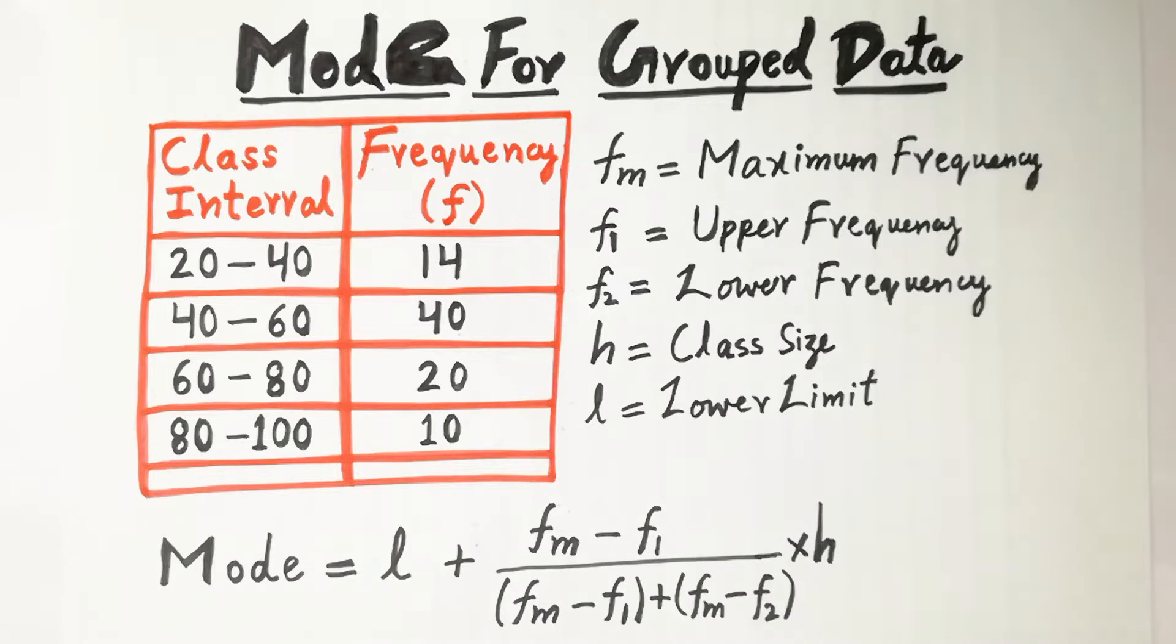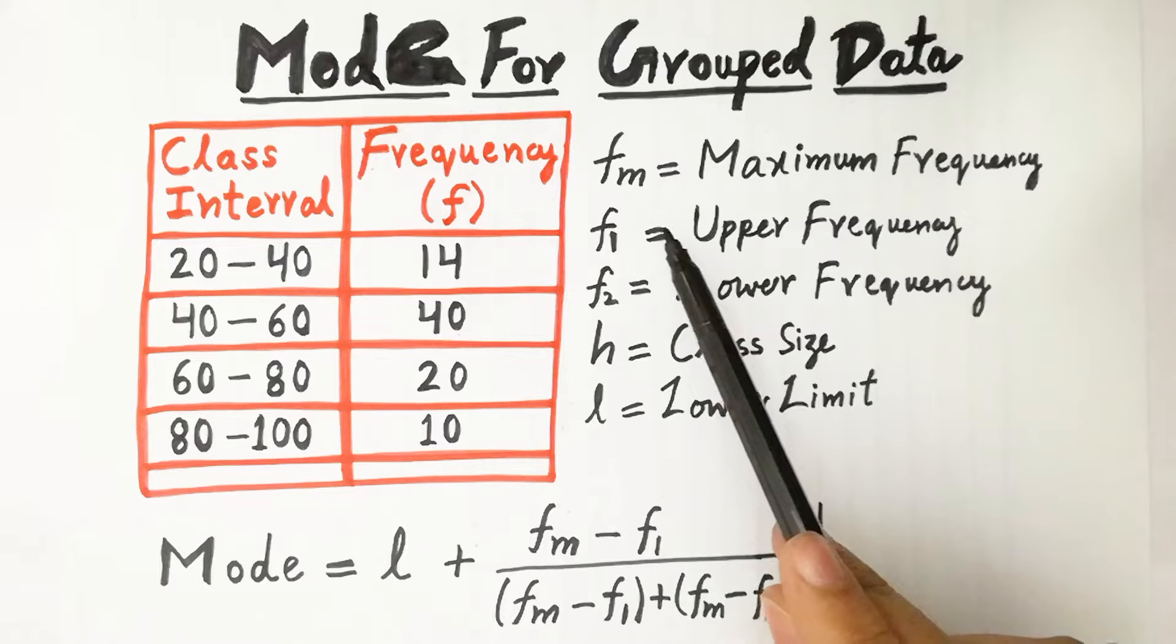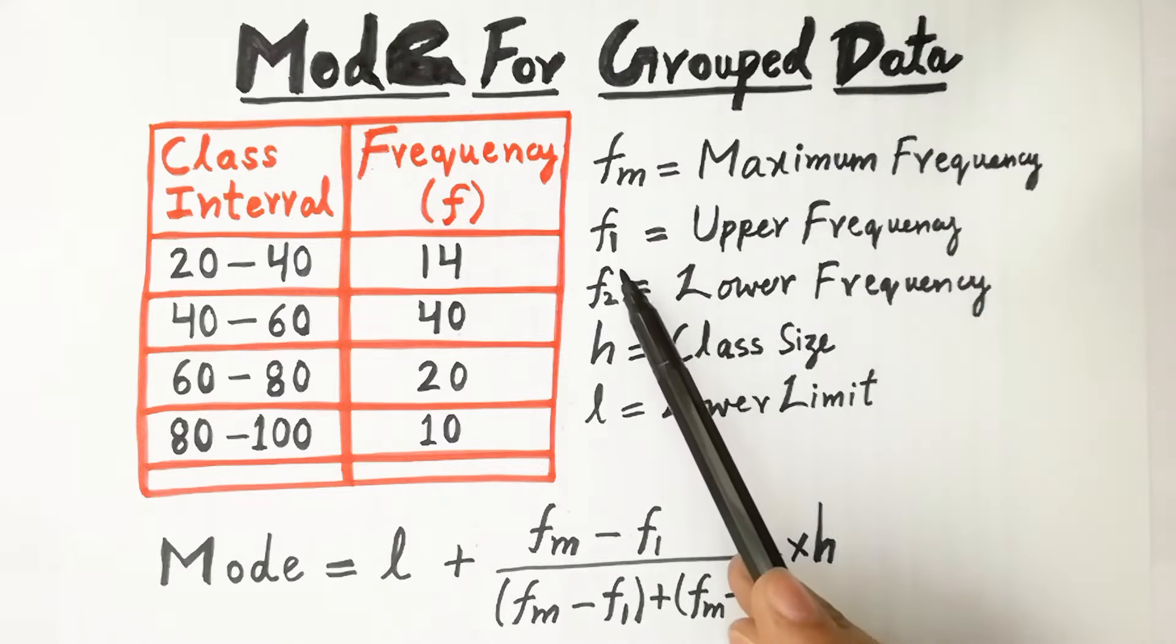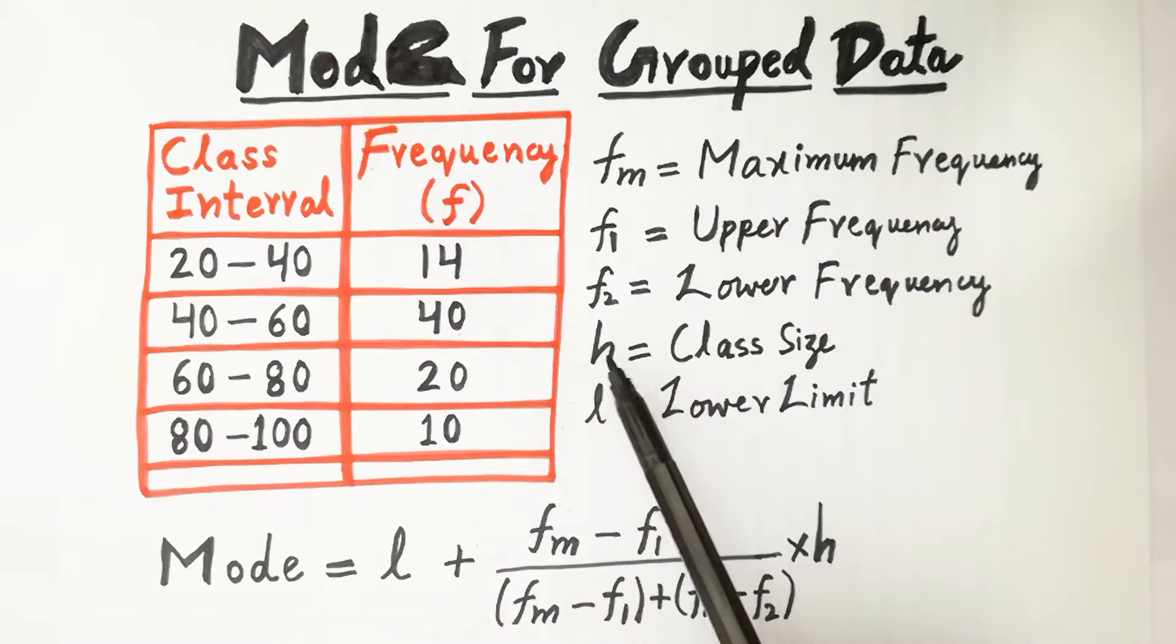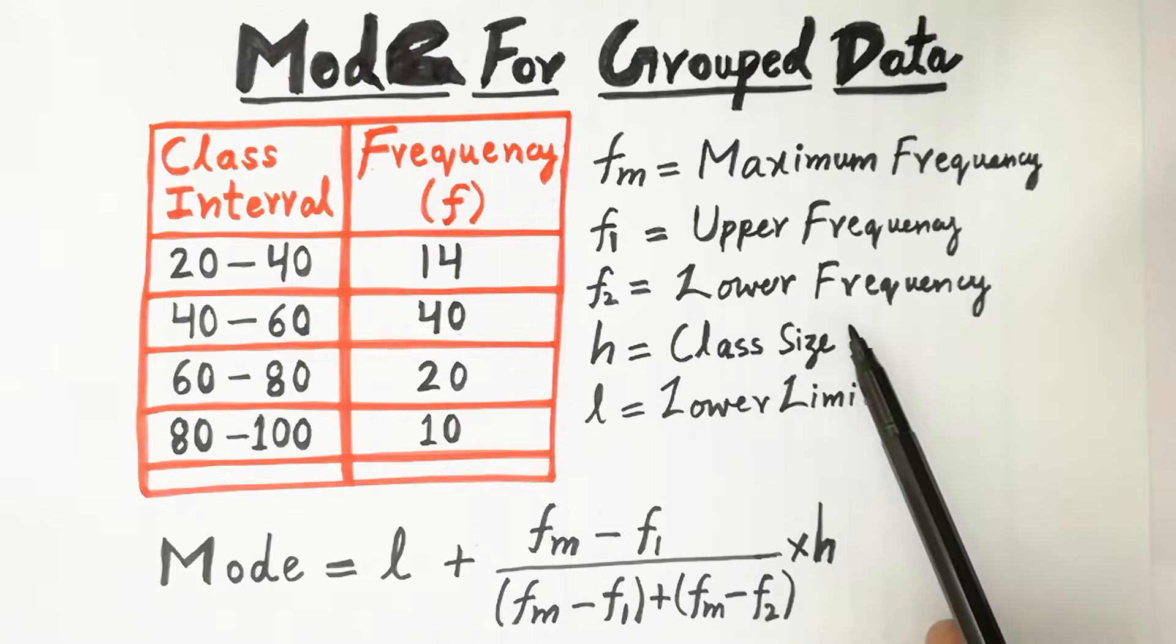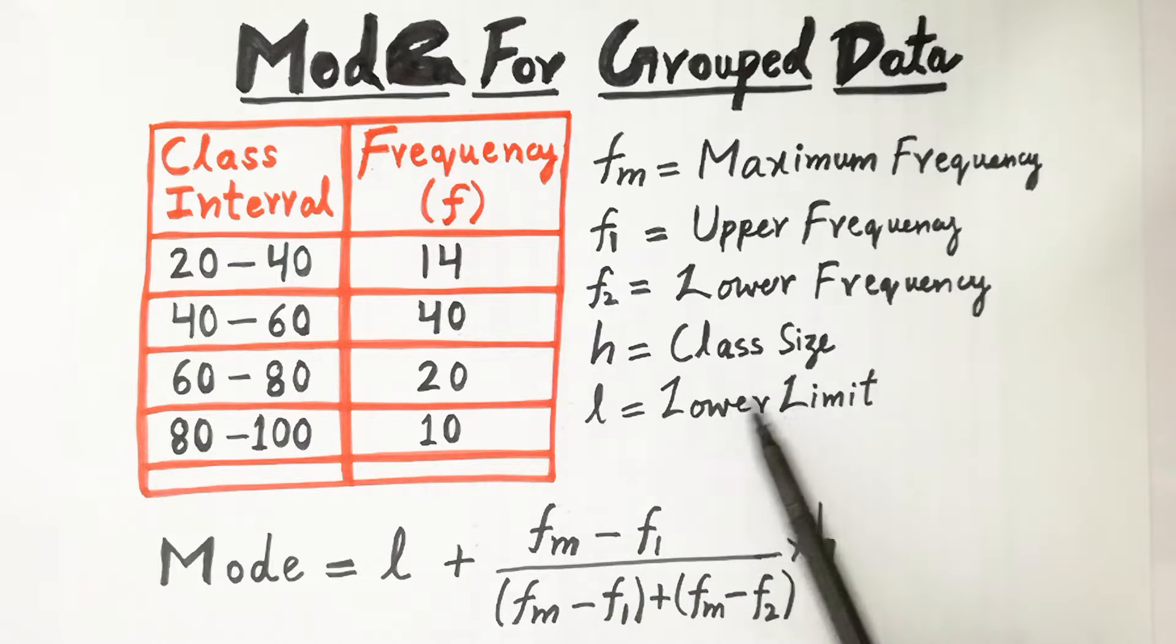First of all, you have to remember the formula of mode which is equal to L plus Fm minus F1 divided by bracket Fm minus F1 plus bracket Fm minus F2 multiplied by H. Fm is maximum frequency, F1 upper frequency, F2 lower frequency, H class size, and L is lower limit.